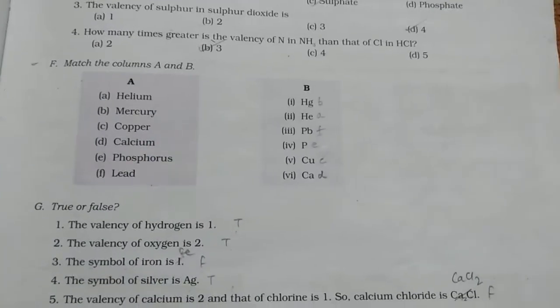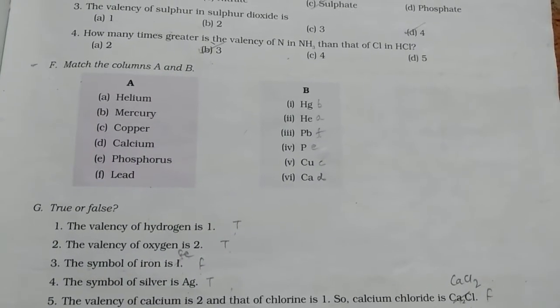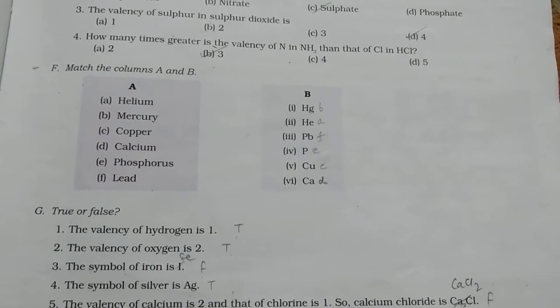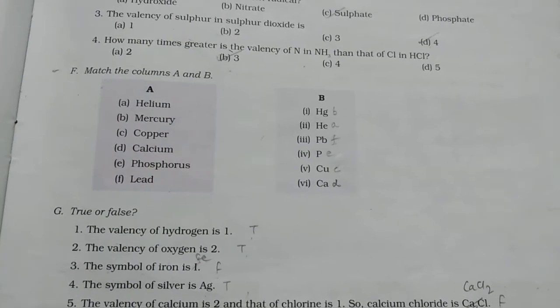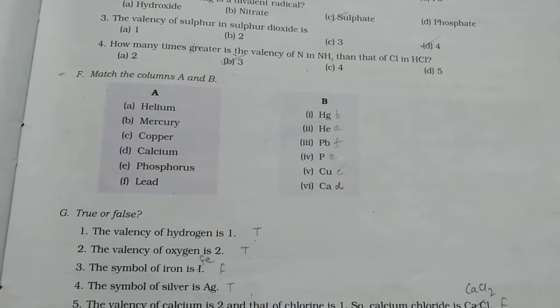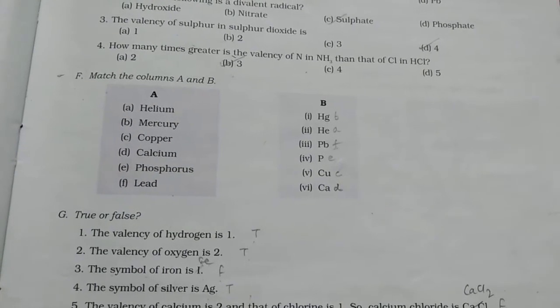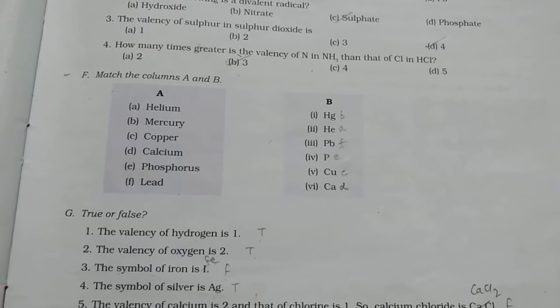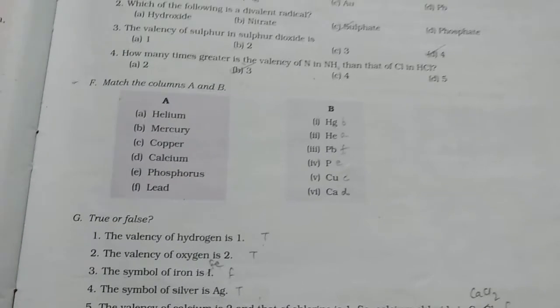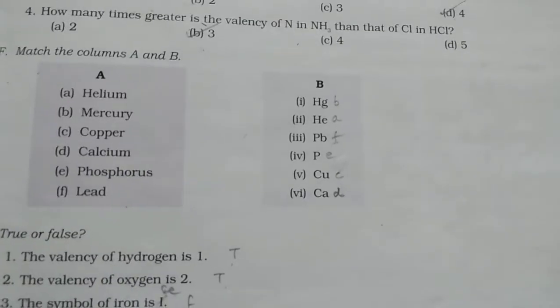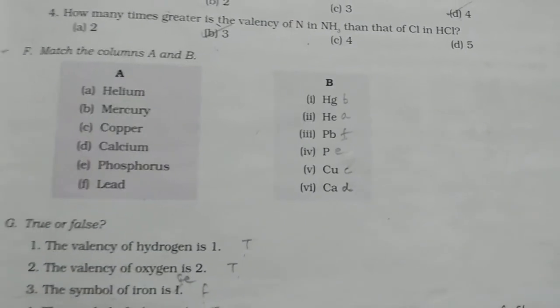Now, matches. The symbol of helium is He. The symbol of mercury is Hg. Symbol of copper is Cu. Symbol of calcium is Ca. Symbol of phosphorus P. And the symbol of lead is Pb. So, the sequence is B, A, F, E, C and D.